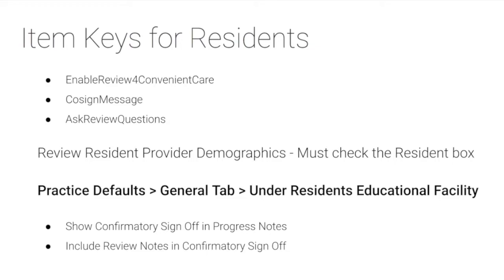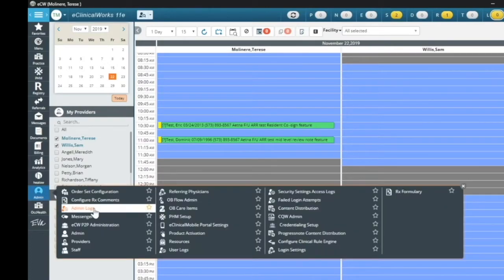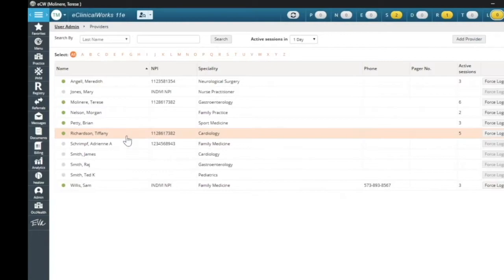So just wanted to let you know that there is some setup involved. I already have the item keys turned on, and I'm going to show you now where you can set up the provider and go through the practice defaults. So if I go to admin and go to my providers, I'm just going to pick a provider.